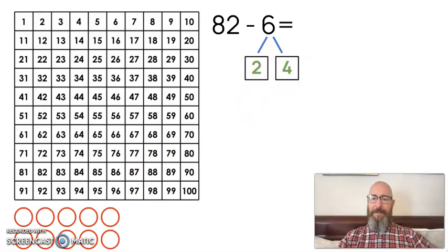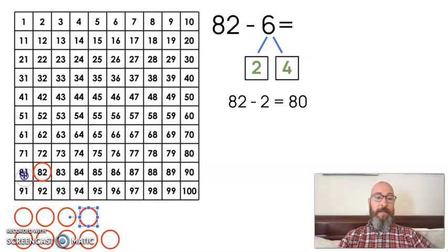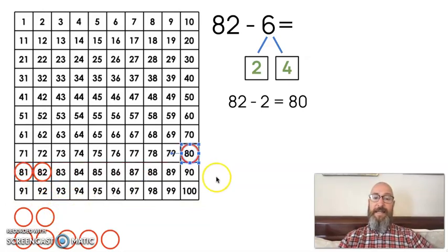Now that I know the best way to break it apart, I'm going to start subtracting. I'm going to start by subtracting 82 minus 2. Now 82 minus 2 we know is 80. I'll prove that. I can start at 82, take away 2. There's 1, there's 2. So you can see it does equal 80.